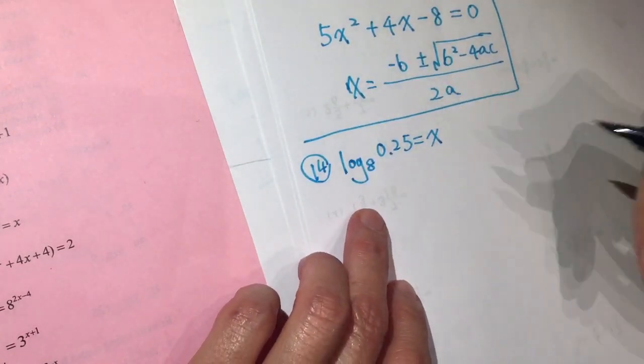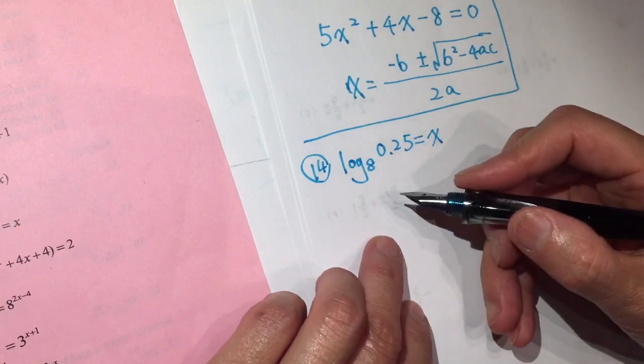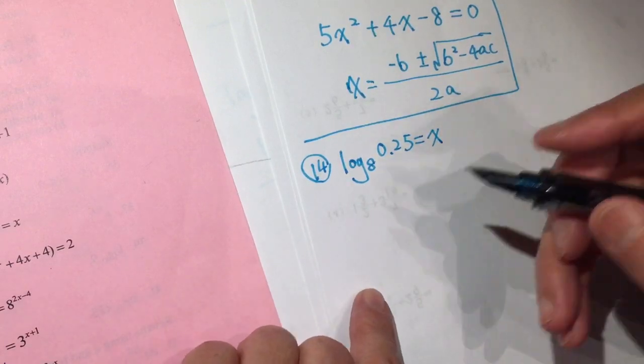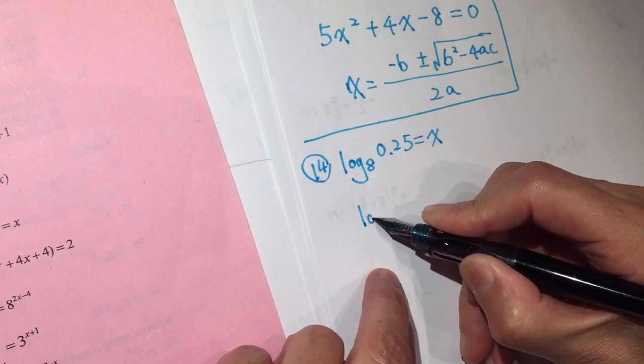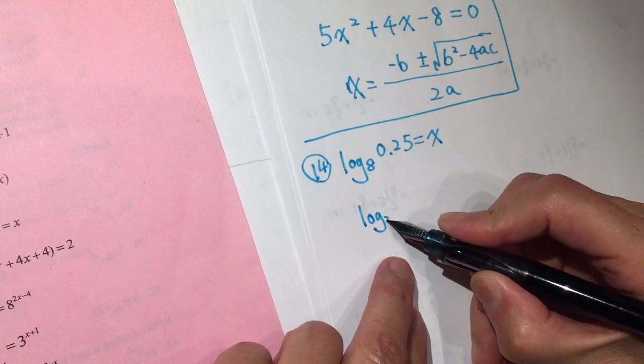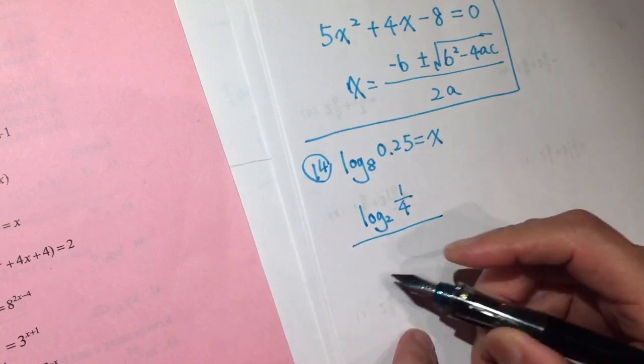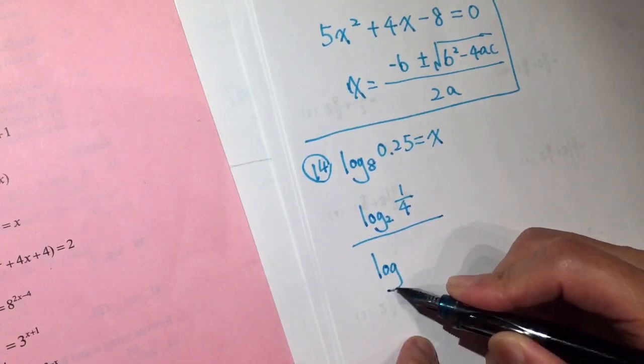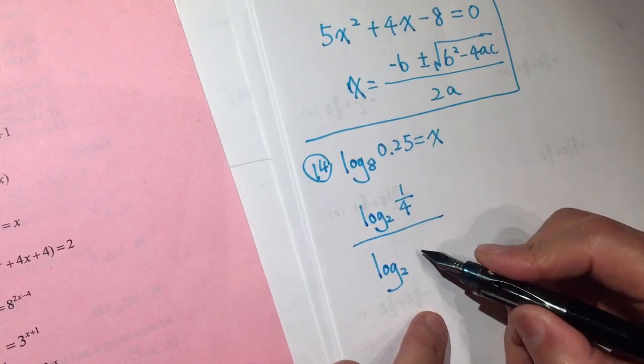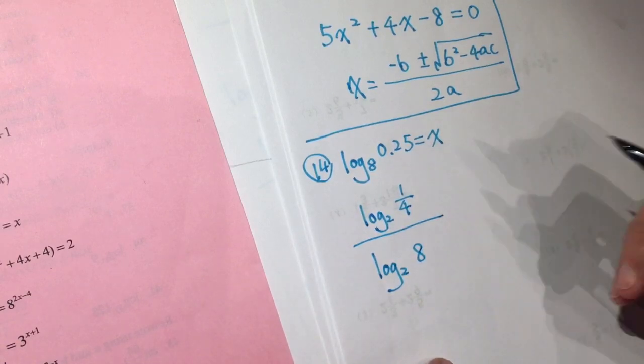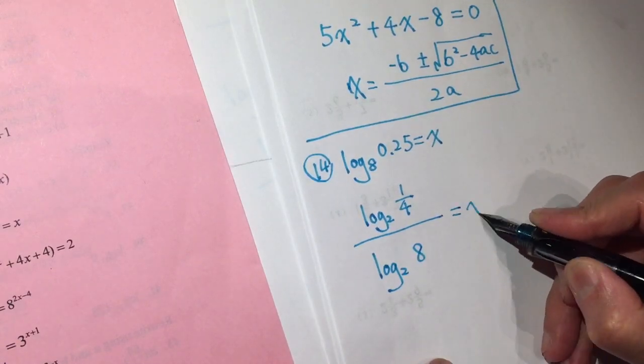So, for this kind of question, you need to change base. Log 2 of 1/4 divided by log 2 of 8 equals X. That's an equivalent change.